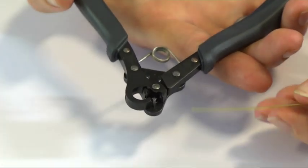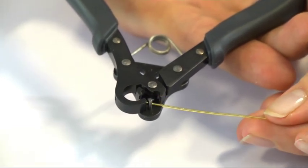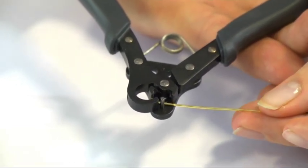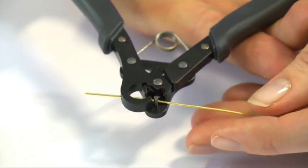OK, so you take your piece of wire and you insert it under this bar, through the middle and then through the hole on the other side, like that.